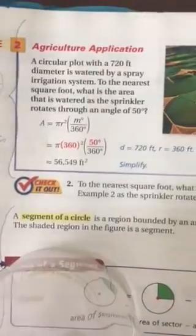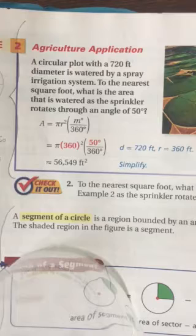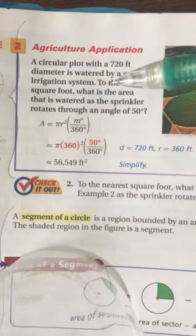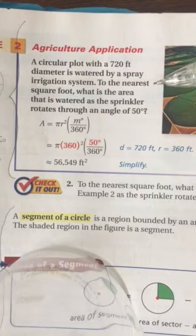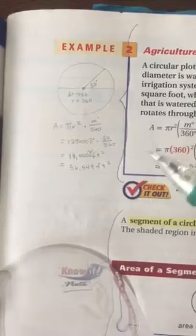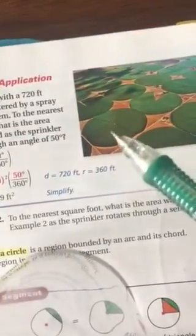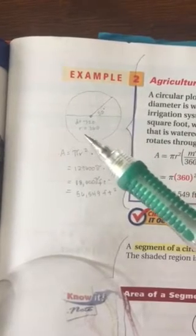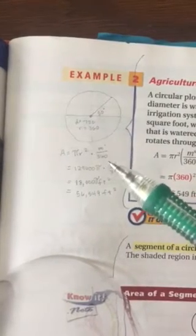Okay, let's move on to example two at the top of page 765. This is simply a word problem application of the exact same principle. A circular plot with a 720 foot diameter is watered by a spray irrigation system. To the nearest square foot, what is the area that is watered as the sprinkler rotates through an angle of 50 degrees? Let's look right here. So I redrew one of these circular plots over here with an angle of 50 degrees and a diameter of 720, which gives us a radius of 360.